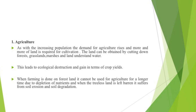The first and most important cause is agriculture. With increasing population, the demand for agriculture rises and more and more land is required for cultivation. Land can be obtained by cutting down forests, grasslands, marshes and even land under water. This leads to ecological destruction. When farming is done on forest land, it cannot be used for agriculture for a longer time due to depletion of nutrients, and when the treeless land is left barren, it suffers from soil erosion and degradation.